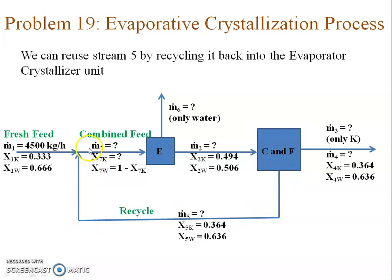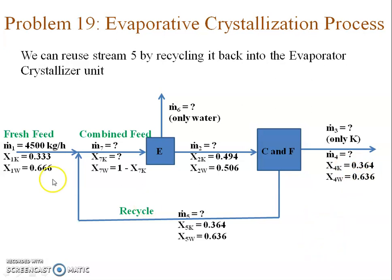So instead of rejecting stream 5, it is recycled back to the evaporator. Once recycled, all flow rates will change, including the crystal yield. The changed problem is: if the filtrate is recycled and combined with the fresh feed to form a combined feed, and this combined feed is sent to the evaporator, what will be the values of all the mass flow rates? We already have the basis and will construct the labeled flowchart for this recycle system.